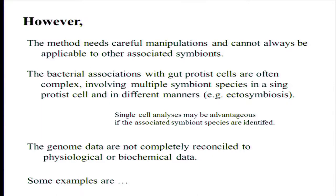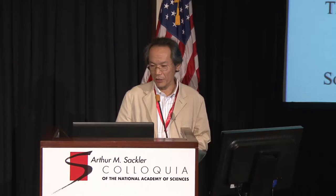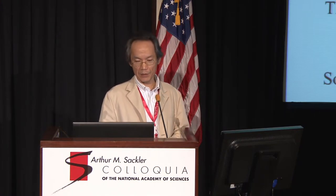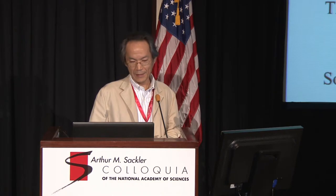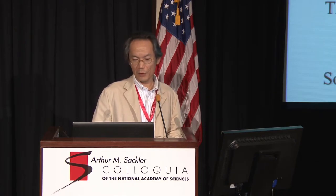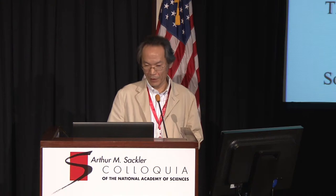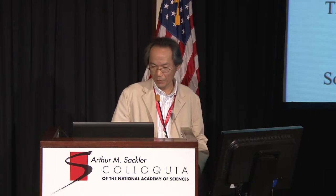However, the applied method cannot always be applicable to other associated symbionts. Furthermore, bacterial associations with gut protist cells are often complex, involving multiple symbiont species within single protist cells and in different manners, such as ectosymbionts. In addition, the genome data are not completely reconciled with the physiological or biochemical data we obtain.